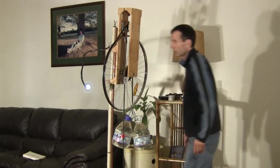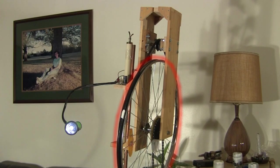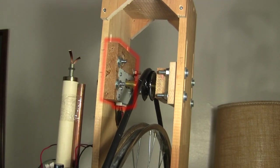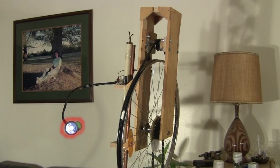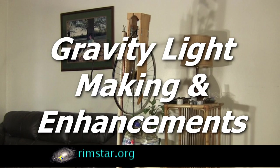Hi gang! This is called a gravity light. As this weight slowly falls, it turns this large diameter bicycle wheel, which then turns this smaller pulley. That's connected to this generator, which powers this light. So it's a gravity powered light. In this video I'll show you how I made it.